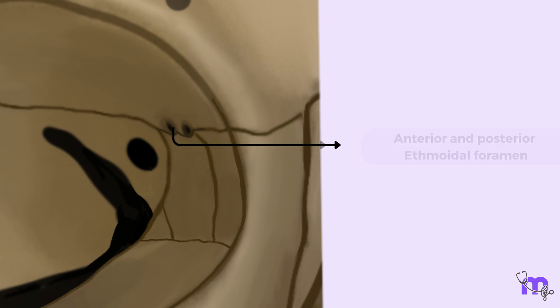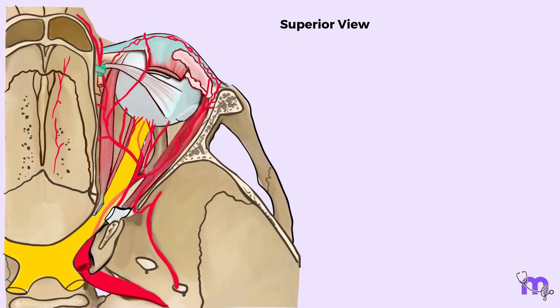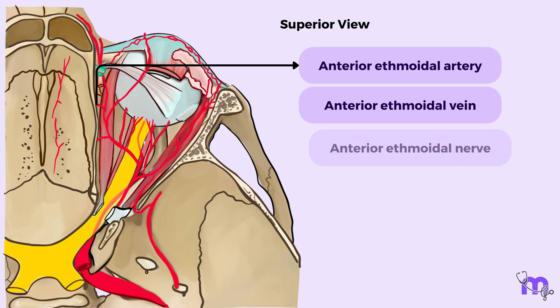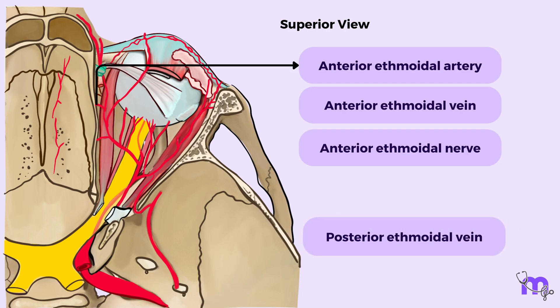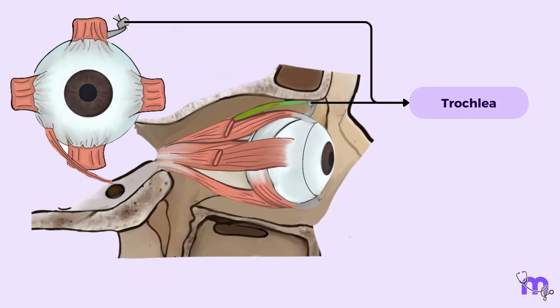Several landmarks draw attention to the medial wall. First, we have the anterior and posterior ethmoidal foramina. The anterior ethmoidal foramen serves as a gateway for the anterior ethmoidal vein, artery, and nerve. The posterior ethmoidal foramen grants passage to the posterior ethmoidal vein, artery, and nerve. Next, we have the trochlea — a cartilaginous structure providing a pathway for the tendon of the superior oblique muscle.